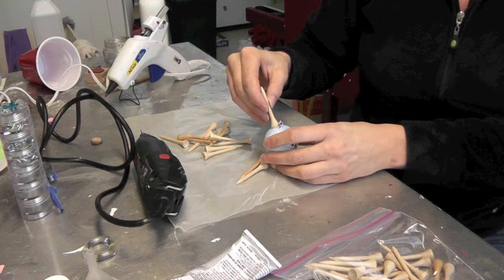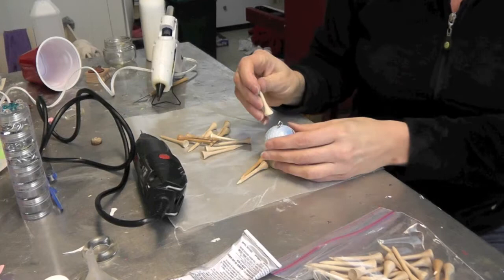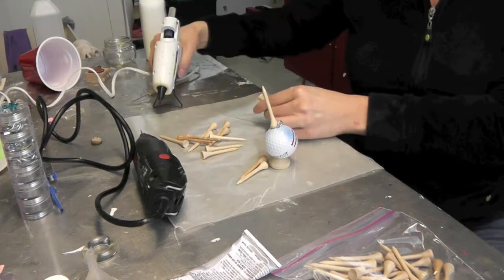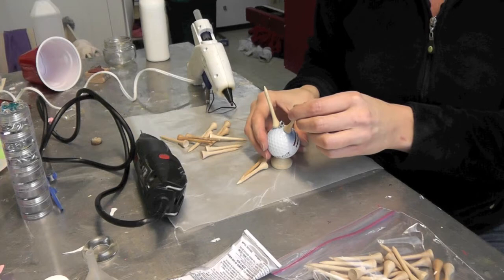So I'm going to take the hot glue and again if you're doing the E6000 take that instead or whatever glue you prefer and start placing the golf tees on here.